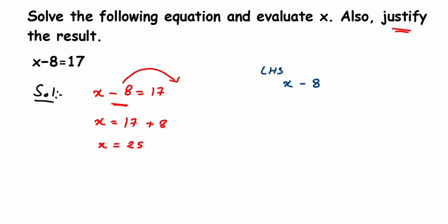In place of x I'm going to substitute 25, so 25 minus 8, which equals 17. We also know that RHS, the right hand side, is also equal to 17 in the given equation. Therefore, we can say that LHS is equal to RHS.